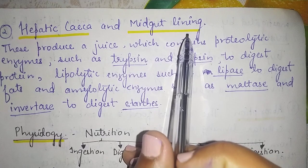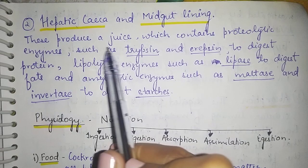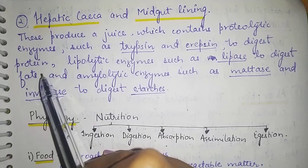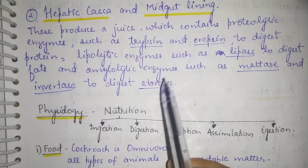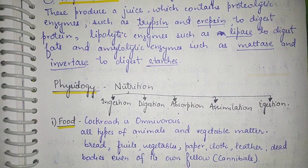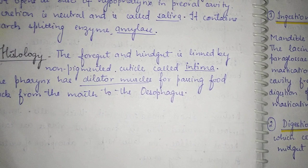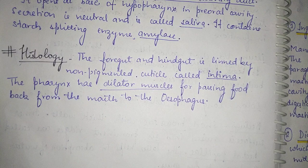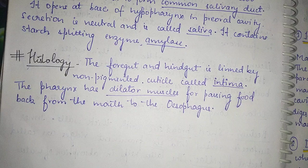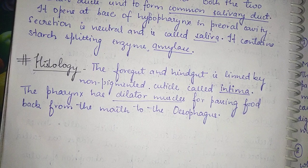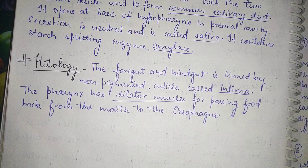The hepatic caeca and midgut lining produce juice containing proteolytic enzymes such as trypsin and erepsin to digest protein, lipolytic enzymes such as lipase to digest fat, and amylolytic enzymes such as maltase and invertase to digest starch. Regarding histology, the foregut and hindgut are lined by a non-pigmented cuticle called the intima, since they are ectodermal in origin with cuticular covering continuous with the exoskeleton. The pharynx has dilator muscles for passing food back from the mouth to the esophagus.